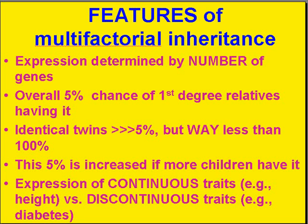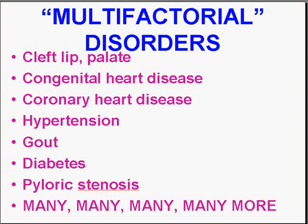If you do have first degree relatives that have it, then your chances of other relatives having it is also more than 5%. In multifactorial inheritance, we talked about things that were continuous traits, like height and weight, but we're also talking about diseases which are either present or absent, or what we call discontinuous traits, like type 2 diabetes. Many diseases classically thought of as congenital, as well as many common diseases — cleft lip, congenital heart disease, coronary heart disease, hypertension, gout, diabetes — fall into this category.